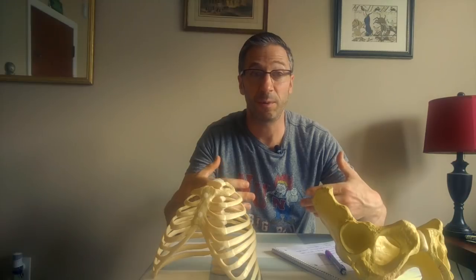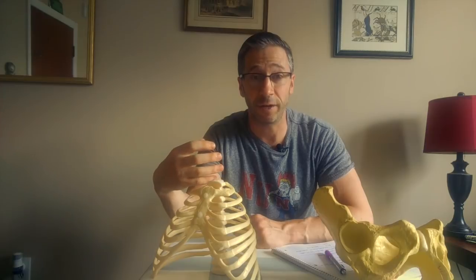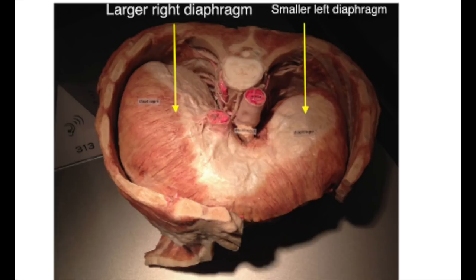The psoas did not cause the anterior pelvic tilt. In fact, the psoas is just as much a victim as any other muscle. The problem is people would feel those hip flexors tight and associate the anterior pelvic tilt with tension in the hip flexors — therefore it must be the hip flexors or the psoas causing it. But that's not the case. The anterior pelvic tilt is being caused by the influence of the right diaphragm being bigger than the left diaphragm.